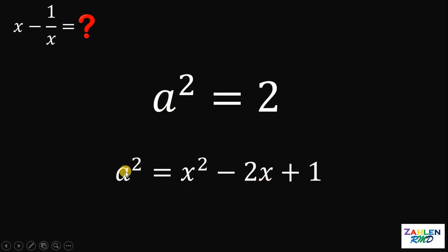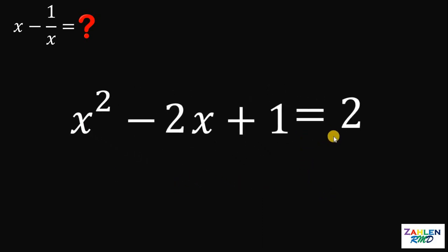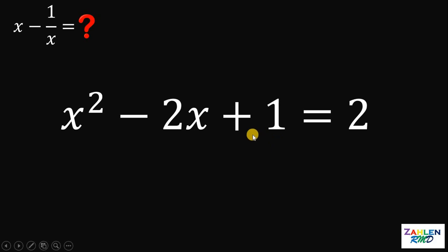Now, since they are both equal to a squared, we can say that x squared minus 2x plus 1 equals 2. Now, let's equate this equation to 0 by subtracting 2 on both sides.